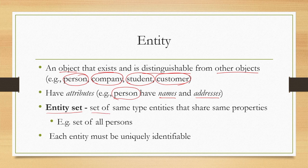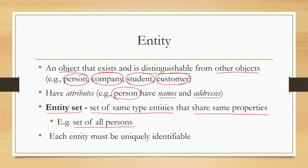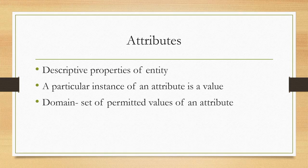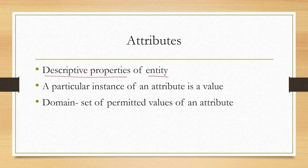Then we have the notion of an entity set, which is a set of same-type entities that share the same properties. For example, the set of all persons constitutes an entity set. Whenever we are defining something as an entity in order to model a data store, we have to keep in mind that each entity must be uniquely identifiable. Next is the idea of attributes — attributes are essentially descriptive properties of an entity. If we are defining something as an entity and it has some properties, we call those properties attributes.